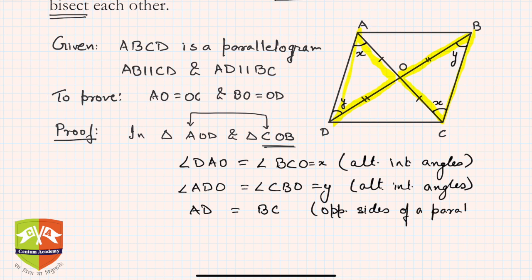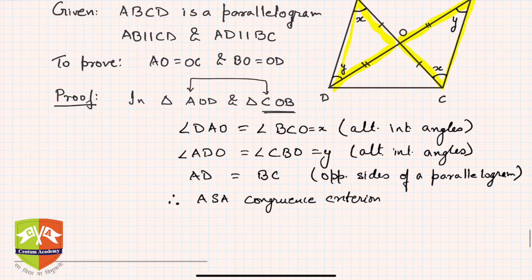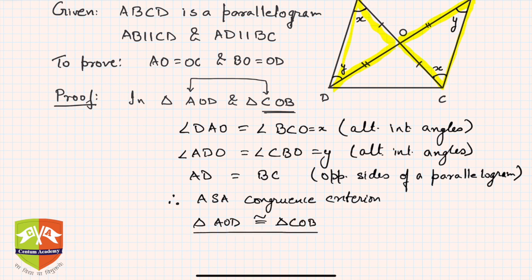We also know that AD is equal to BC, because opposite sides of a parallelogram are equal — as proved in the previous session. Therefore, by the ASA congruence criterion, we can establish congruence.